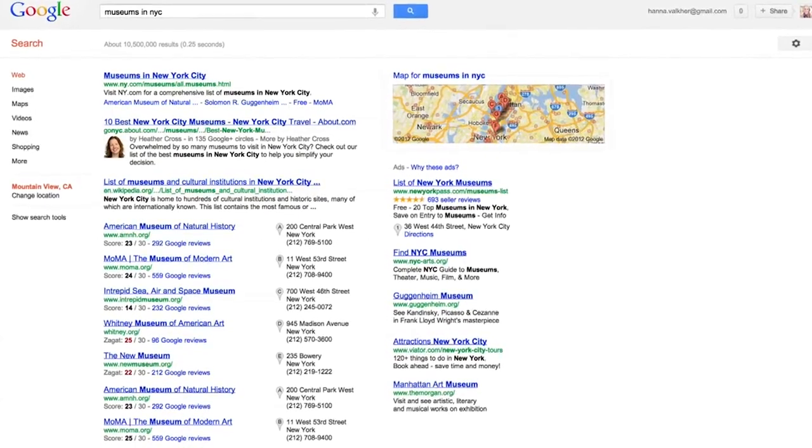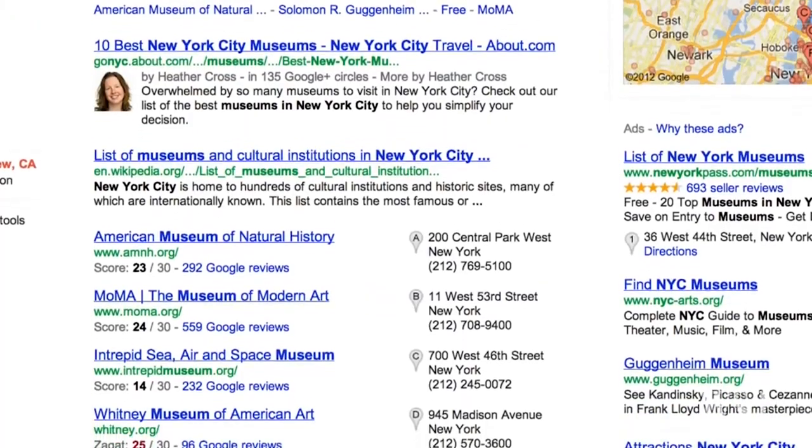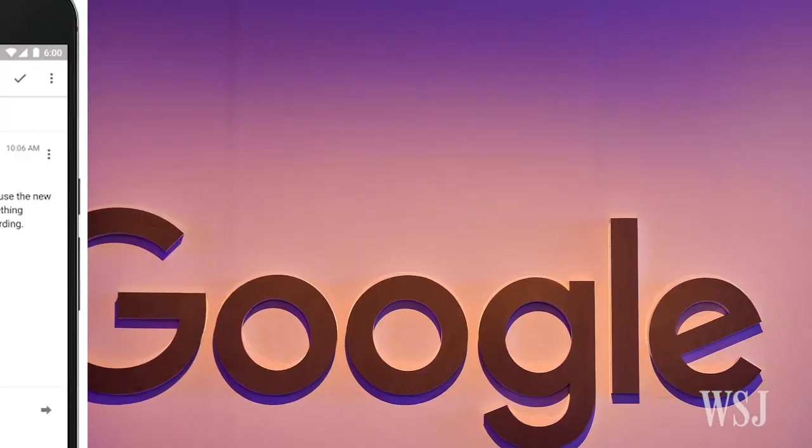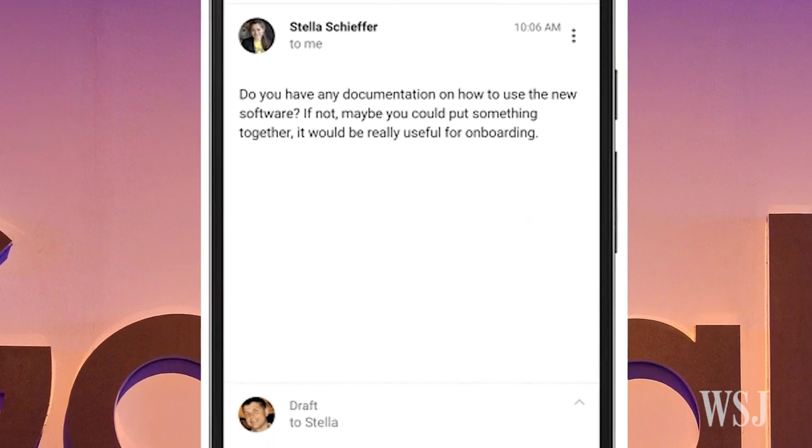Google currently uses the Parsi program in several of its services, including Search and Smart Reply, a feature suggesting quick email responses based on the content of received missives.